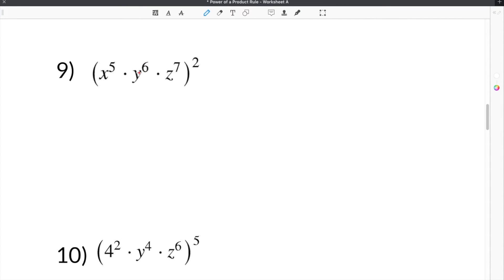The last example we work on is going to have variables instead of numbers as the basis. When we have variables, nothing about the rule will change. So we will still take the exponent on the outside and distribute it to everything on the inside. In the case of number 9, we have x to the fifth times y to the sixth times z to the seventh, the whole quantity raised to the second power. So we will take this 2 and distribute it to everything on the inside of the parenthesis.